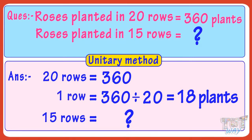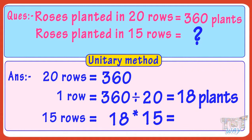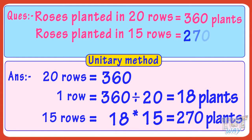So we have calculated the rose plants that can be planted in one row. For finding rose plants that can be planted in 15 rows, we just multiply 18 by 15. 18 multiplied by 15 equals 270. So 270 rose plants can be planted in 15 rows.